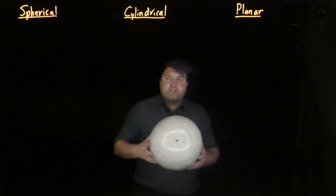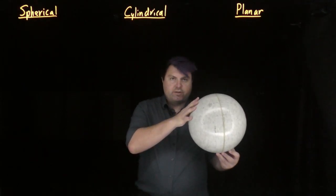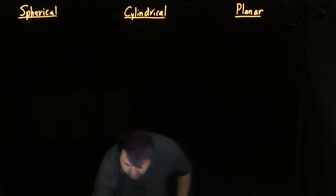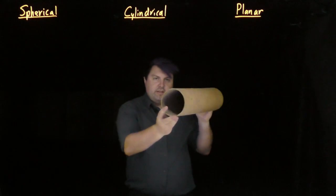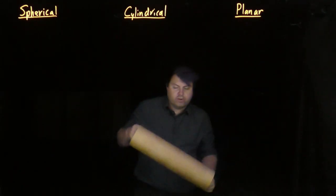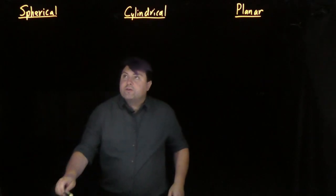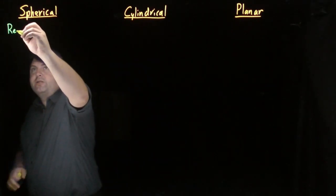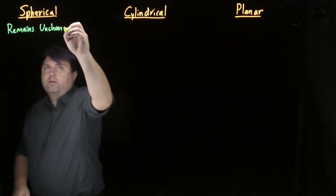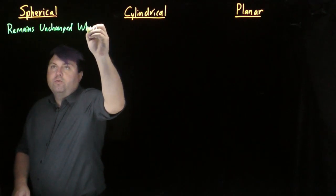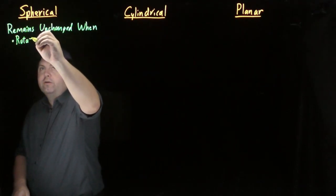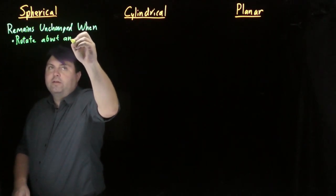When we talk about symmetries, we're talking about the symmetries of the charge distribution. If I have a sphere as a charge distribution, I can rotate it in this direction, or this direction, or this direction, and it still looks like a sphere. The test for spherical symmetry is that it remains unchanged when I rotate about any axis.